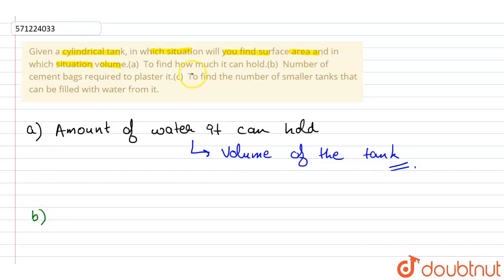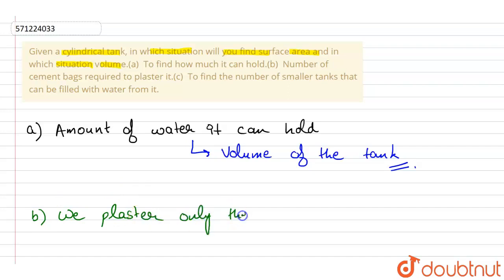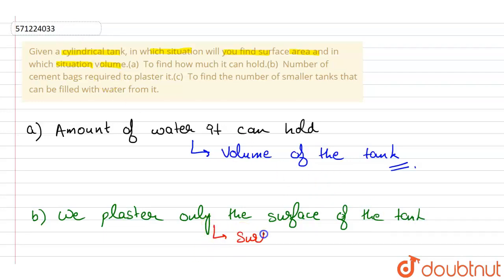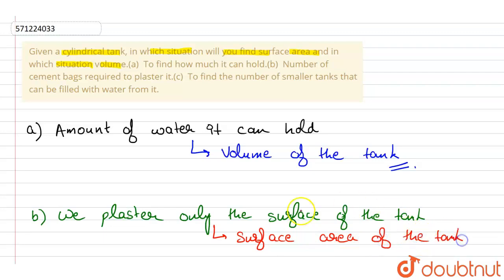The second part is given: the number of cement bags required to plaster it. Now, we plaster only the surface of the tank. Therefore, we will be finding out the surface area of the tank.